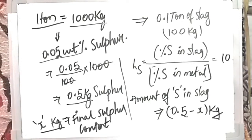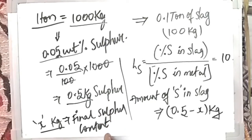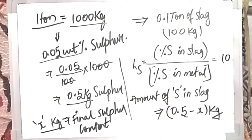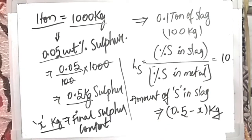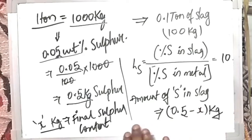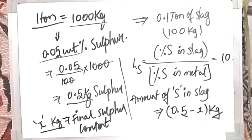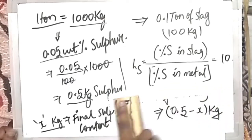So 0.05 minus x is the initial weight of sulfur minus the final weight of sulfur in the liquid steel, and this amount transfers into the slag. Now we know the amount of sulfur in the slag and the final sulfur content in the metal. Using these two, we'll substitute into the distribution ratio formula.